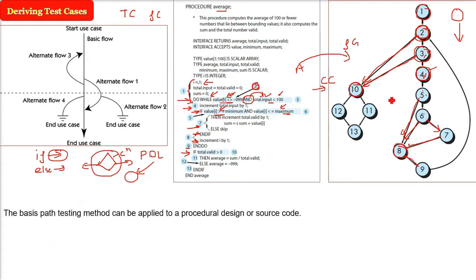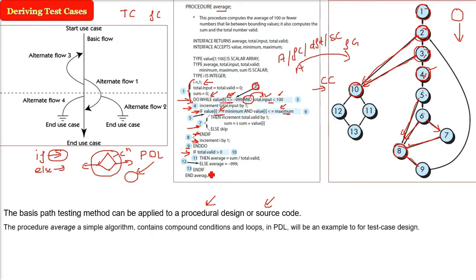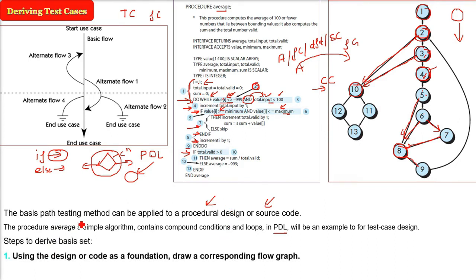So the basis path testing method can be applied to a procedural design, or a source code, or a flowchart, or a data flow diagram. Whichever input you have, you just identify the conditional statements and compound statements and name them as nodes and join them. This was the average simple algorithm, which has compound conditions and loops, so we took it as an example of test case design.